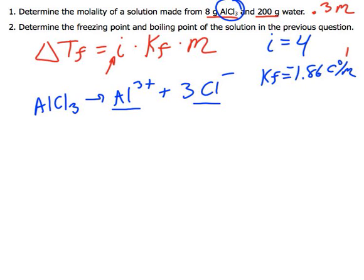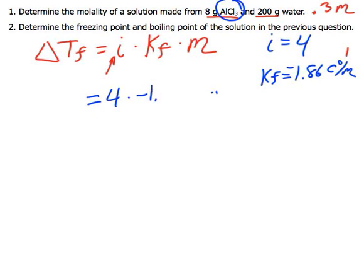So I'm going to just go ahead and make this calculation. The freezing point change is going to be 4 times negative 1.86 Celsius degrees per molal times 0.3 molal. So 4 times negative 1.86 times 0.3. And that represents a change of negative 2.2, I'm going to round, Celsius degrees.